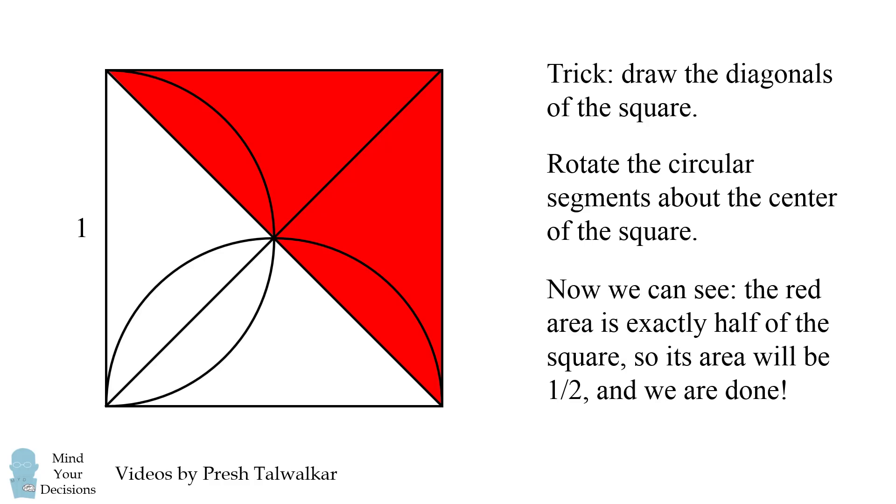Now we can see the red area is exactly half of the square because it fills the area above the diagonal. So the red area will be half of the square's area, so it will be one-half, and we're done solving this problem.